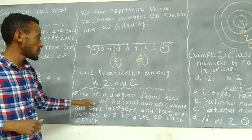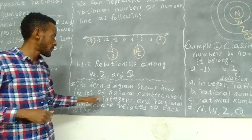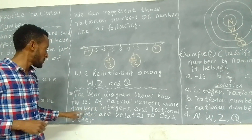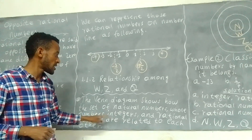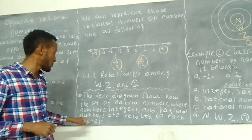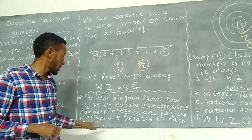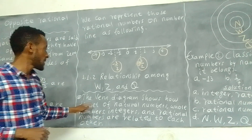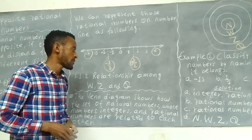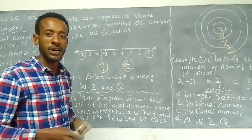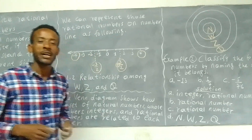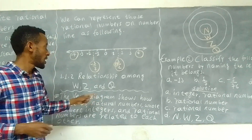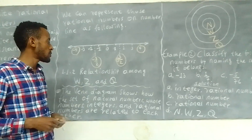The Venn diagram shows how the set of natural numbers, whole numbers, integers, and rational numbers are related to each other.